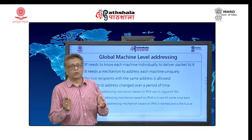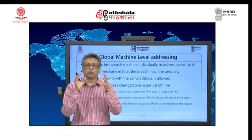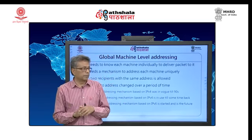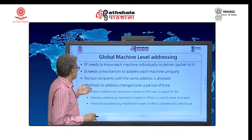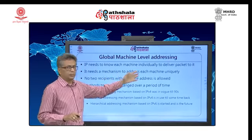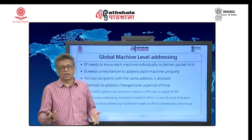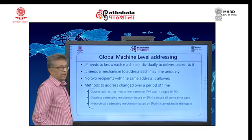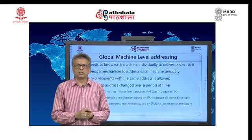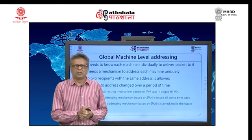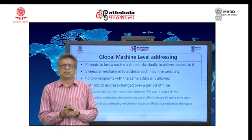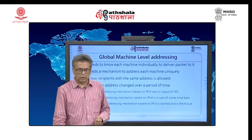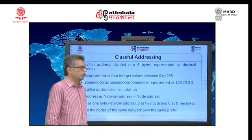The other critical part is global machine-level addressing. You need to individually identify every device globally. There needs to be a mechanism to address each machine uniquely — no two recipients should have the same address. There are three methods: classful addresses, which worked until the 1990s; classless addresses, which are still in use but being replaced by IPv6; and IPv6 itself. We will be briefing about the first two.